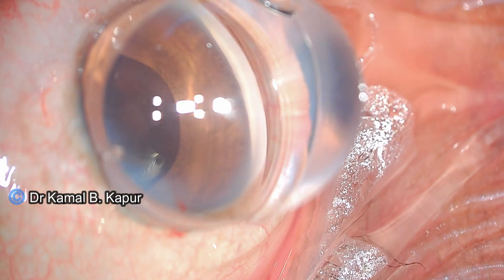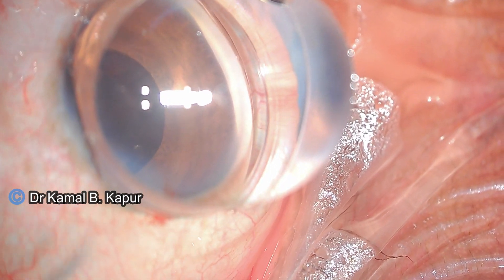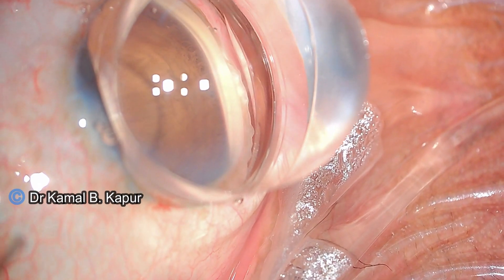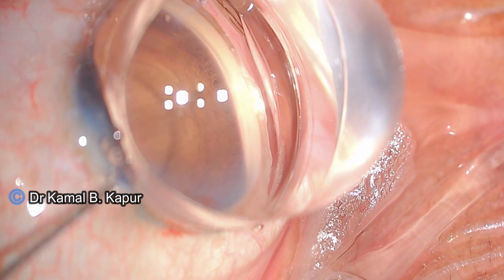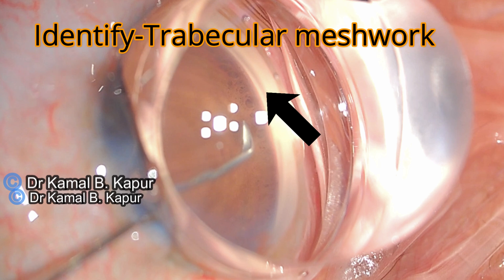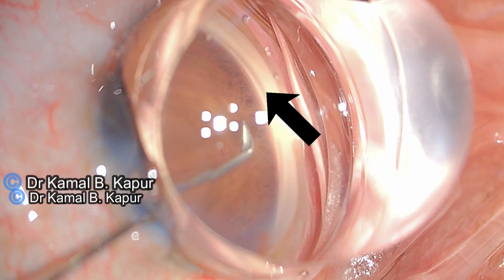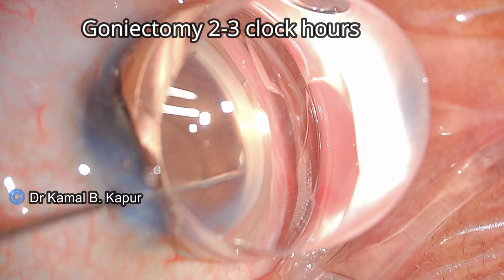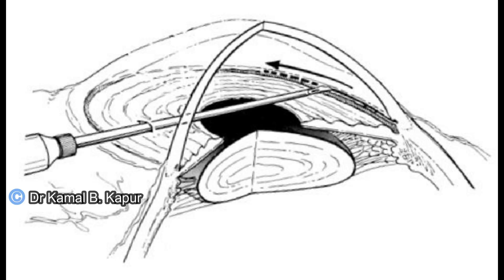We then proceed to insert the needle through the side port we had created. This should be started the moment we get the en-face view of the trabecular meshwork. Once that is achieved, we go in to the trabecular meshwork and scoop or excise it for approximately two to three clock hours — that is, 60 to 90 degrees. Removal of this trabecular meshwork ensures completion of the procedure.